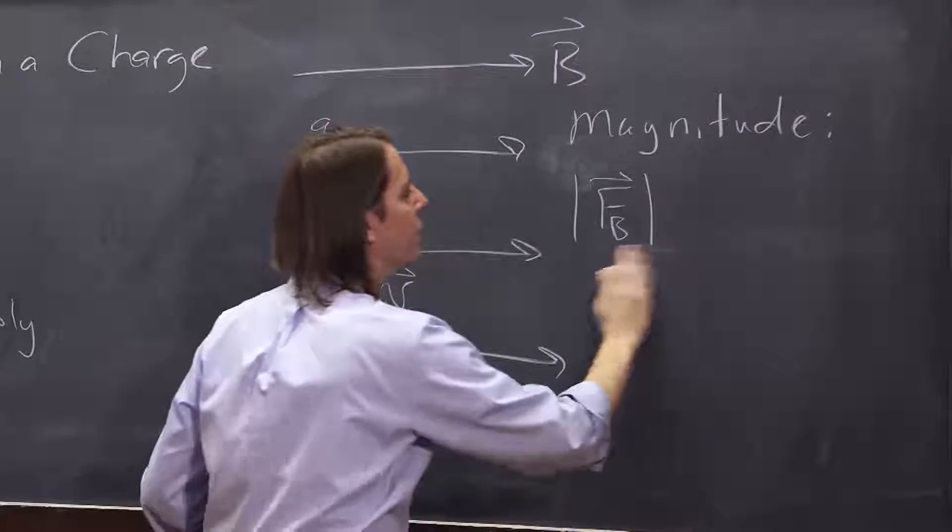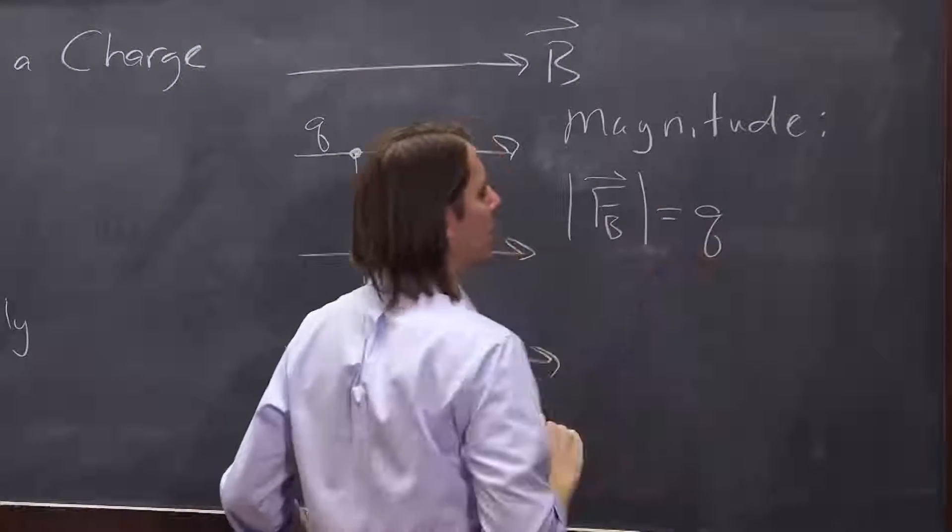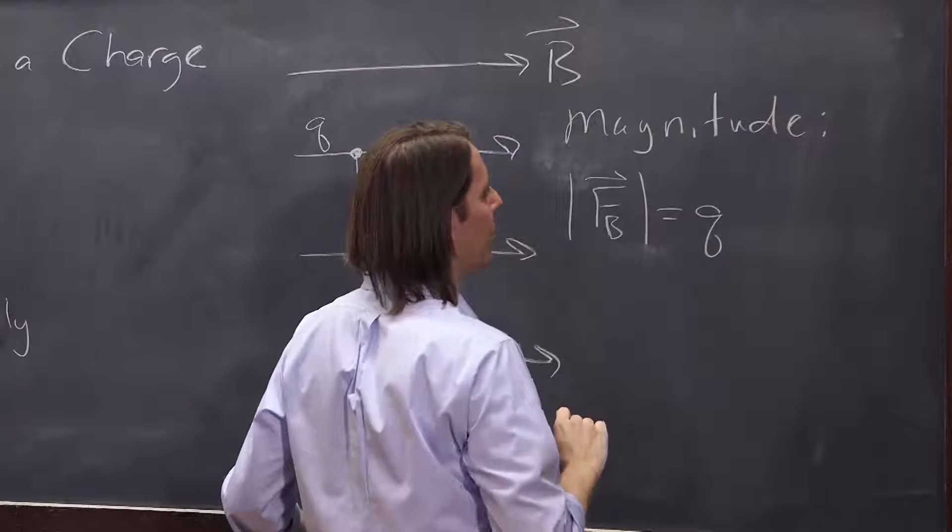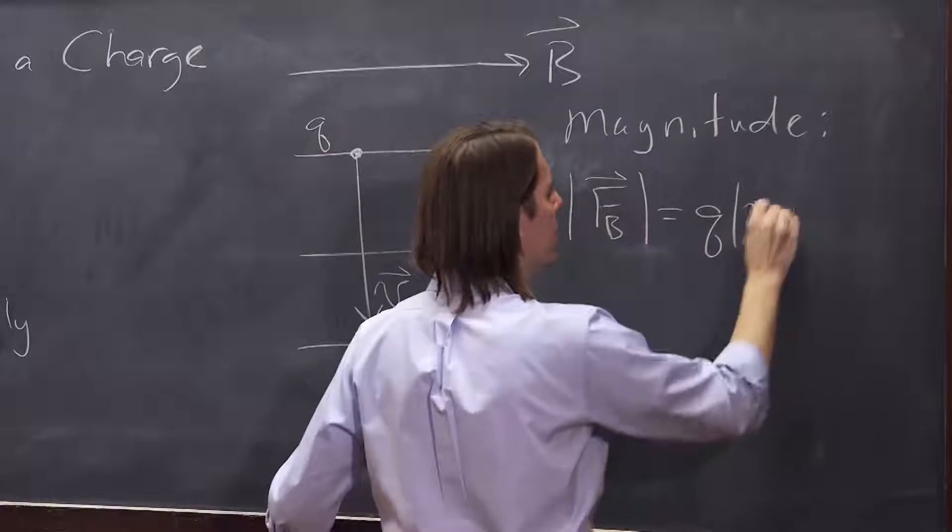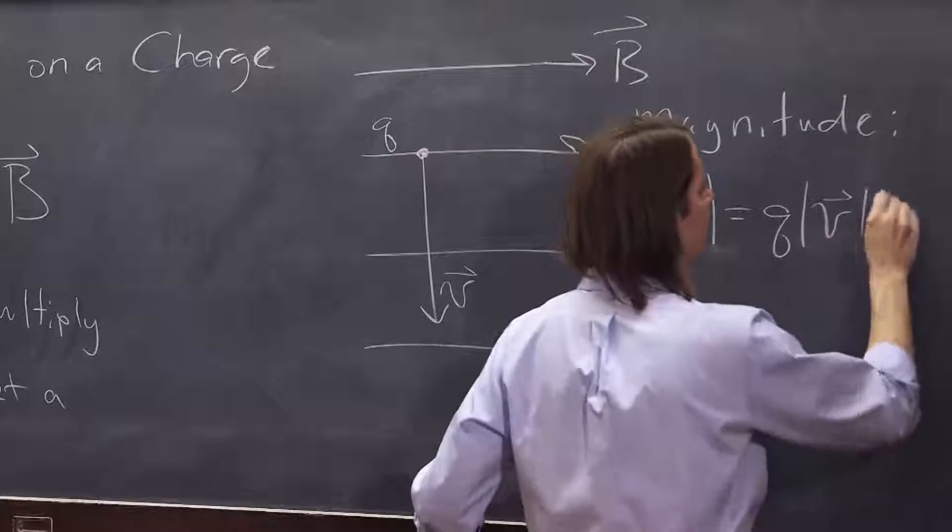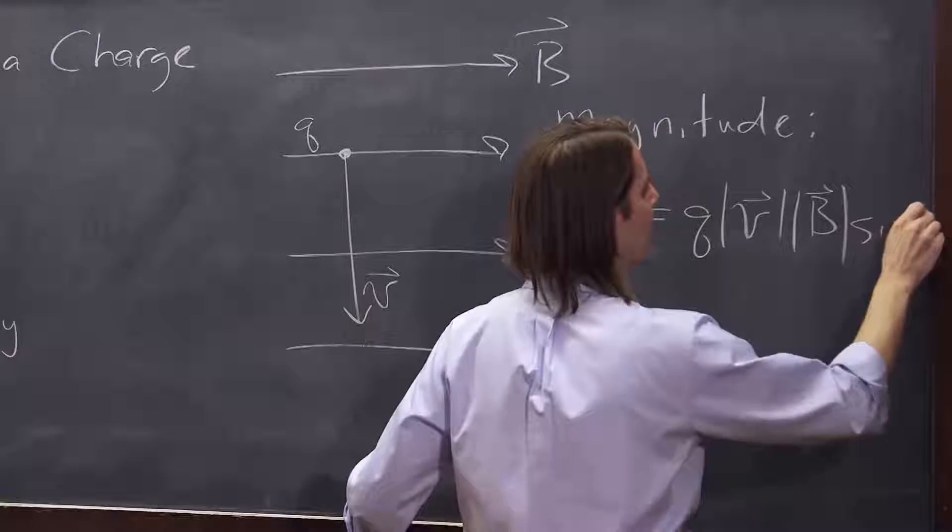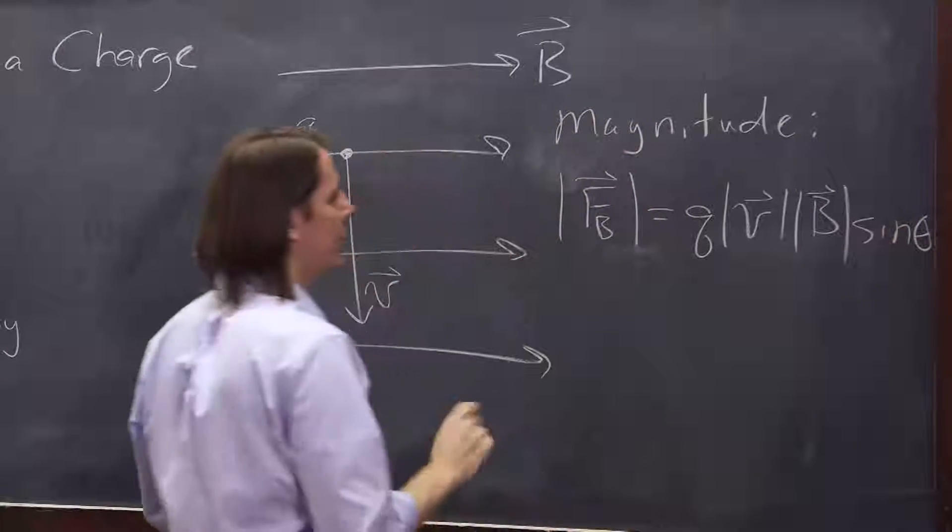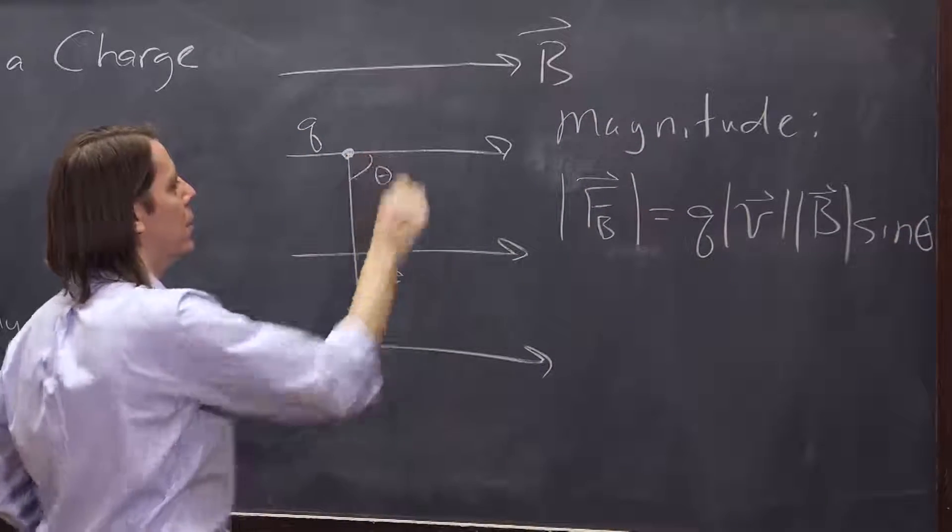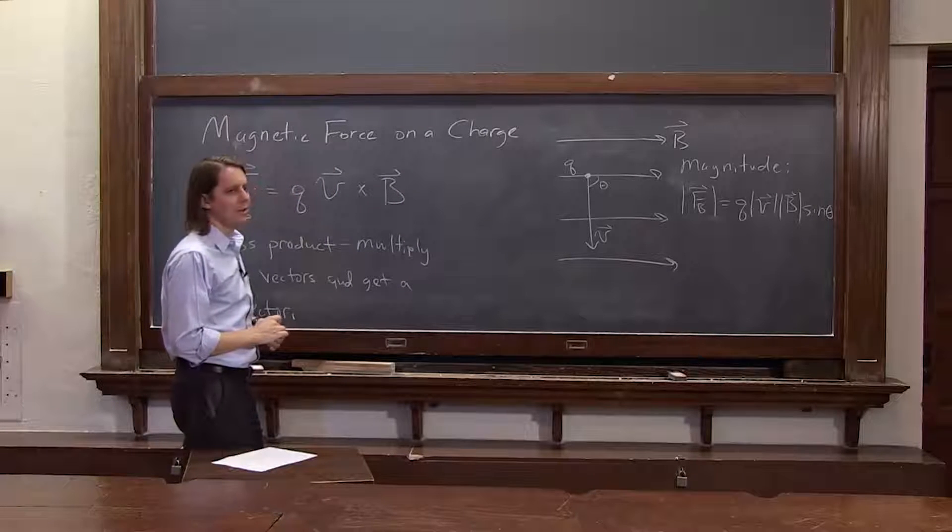Let's do the magnitude first. The magnitude is simply Q, that's just a scalar number, the magnitude of the velocity, the magnitude of the B field, times the sine of the angle between them. Not the cosine. There's theta. It doesn't have to be 90 degrees. I drew it as 90 degrees. But it's Q VB sine theta.